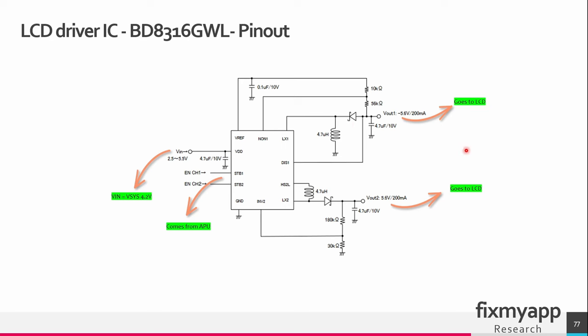The liquid crystals used in the LCD display act as a light modulator. They change their alignment based on the applied voltage, controlling the passage of light through the display. By applying the appropriate voltage with the correct polarity, the liquid crystals can be manipulated to create the desired display effect, such as showing an image, text, or graphics.